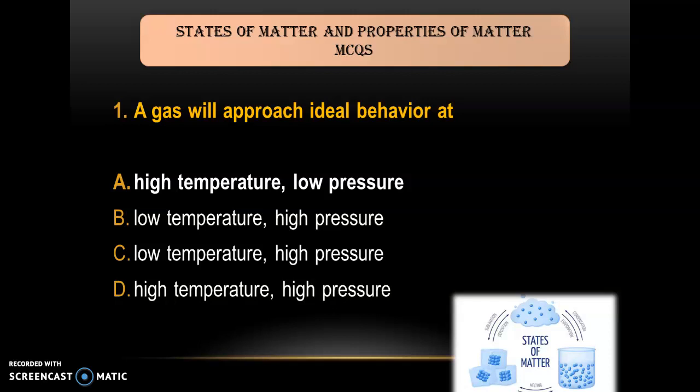Question 1: A gas will approach ideal behavior at — A) high temperature, low pressure; B) low temperature, high pressure; C) high temperature, low pressure; D) high temperature, high pressure. The answer is high temperature and low pressure.